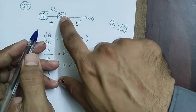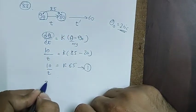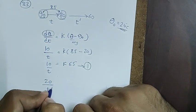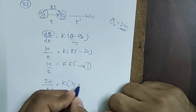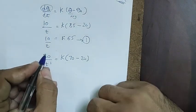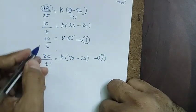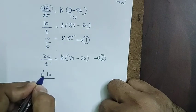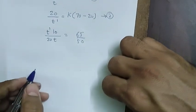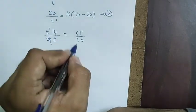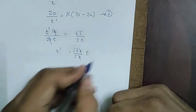Second case: coffee cools from 80 to 60°C in time t'. Drop = 20, average θ = 70, so 20/t' = k × (70 − 20) = 50k. Dividing first equation by second: (10/t)/(20/t') = 65/50. Solving: t'/t = 130/50 = 13/5 — option 1.